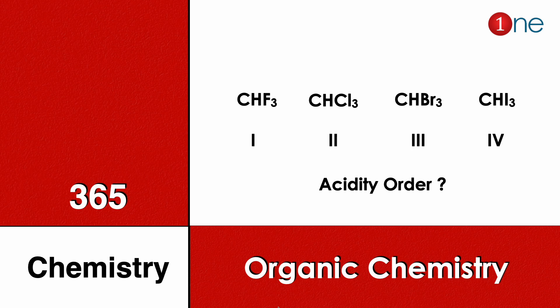Welcome to One Chemistry. This is the 365 Chemistry Series — organic chemistry questions for you. Here you have three different halogenated compounds: first one is chloroform, then fluoroform, then bromoform, and finally iodoform. You have to find among the four which one is more acidic.